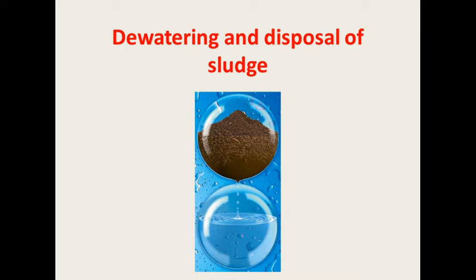Sludge dewatering refers to the separation of water from sludge. If you consider 100 liters of sludge, it contains almost 80 to 90 percent water, meaning it is in semi-solid form with only 10 to 20 percent solid content. The removal of water content from sludge is called dewatering of sludge. In the figure, you can see sludge at the top and water at the bottom.